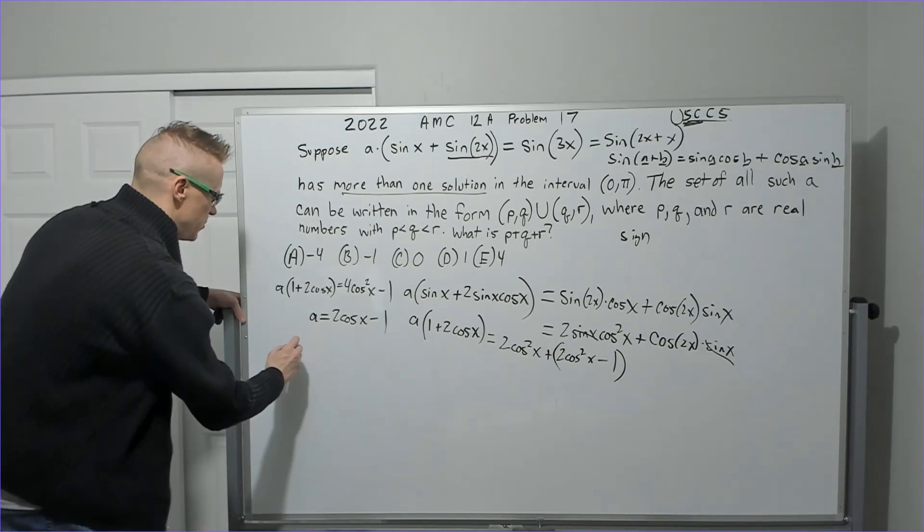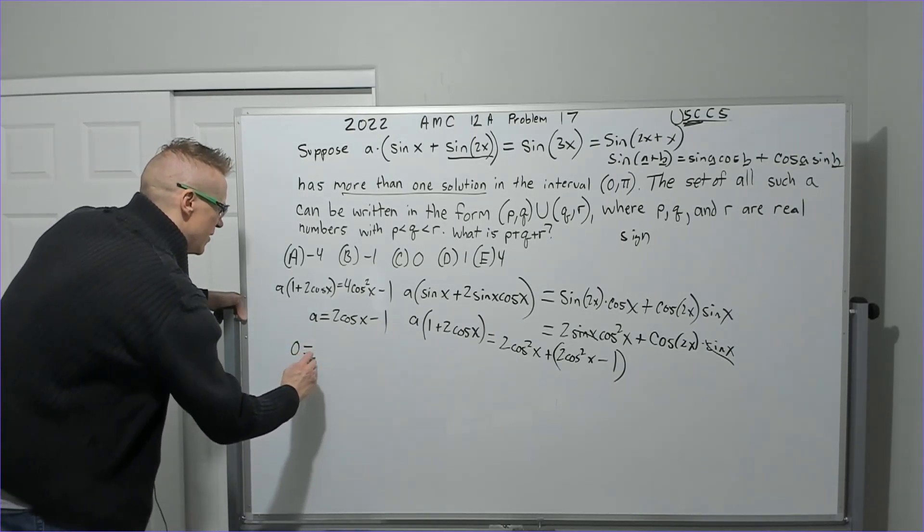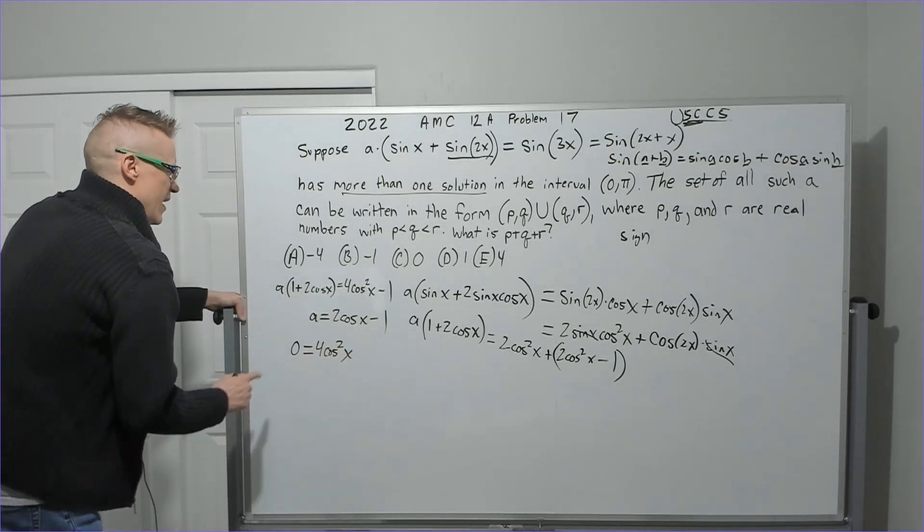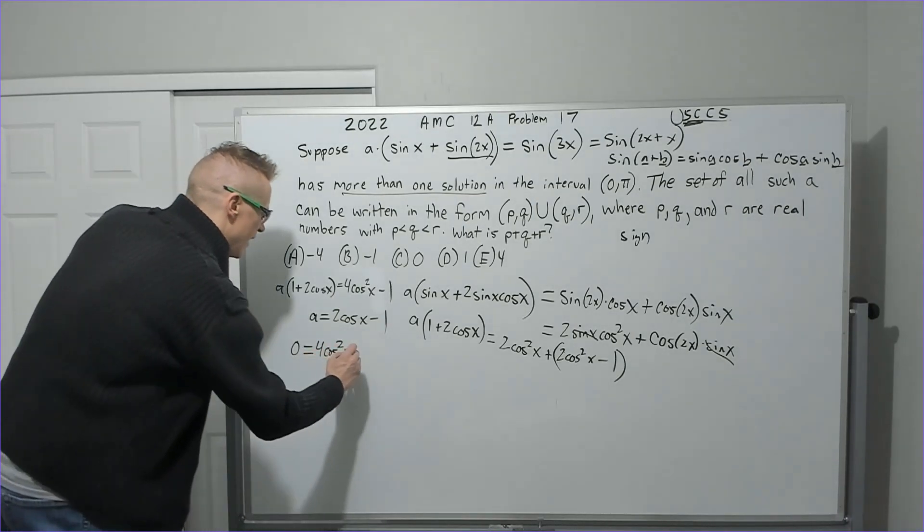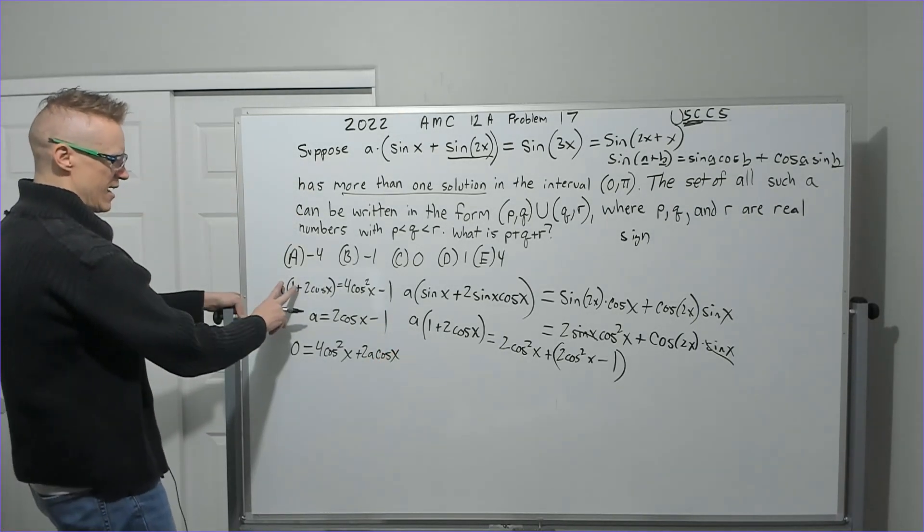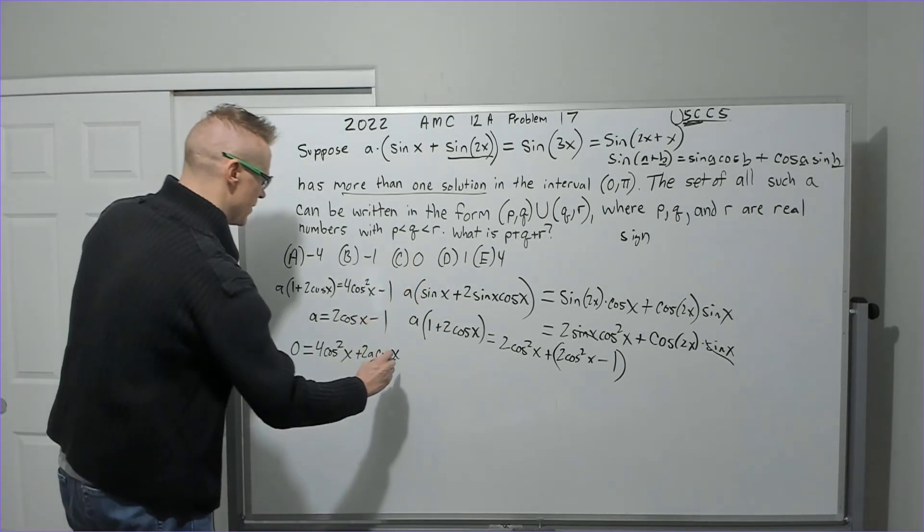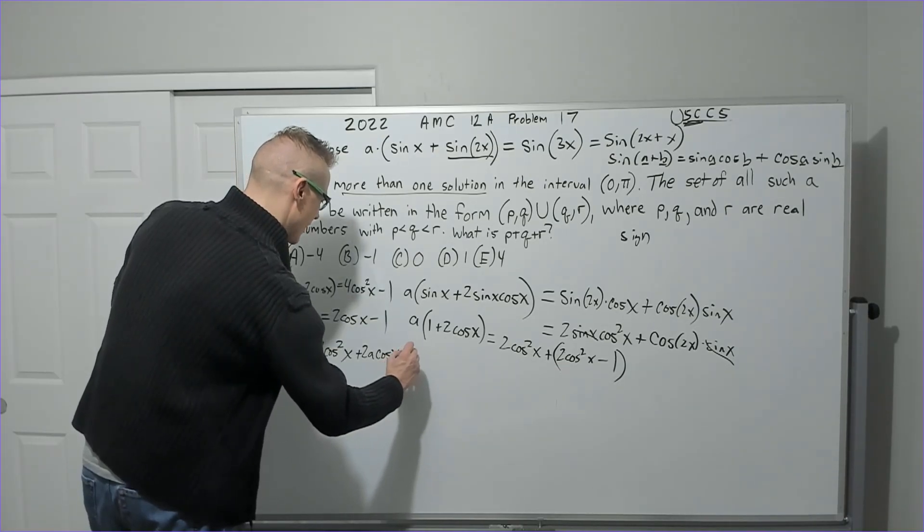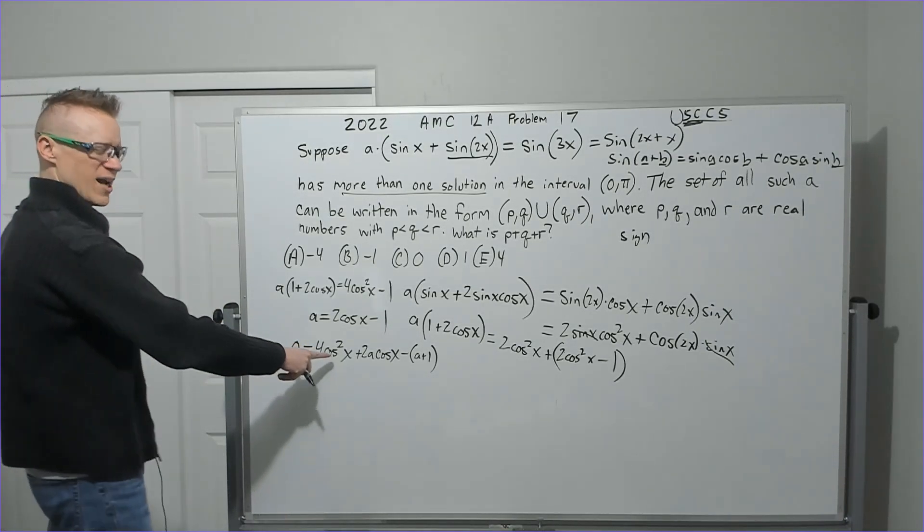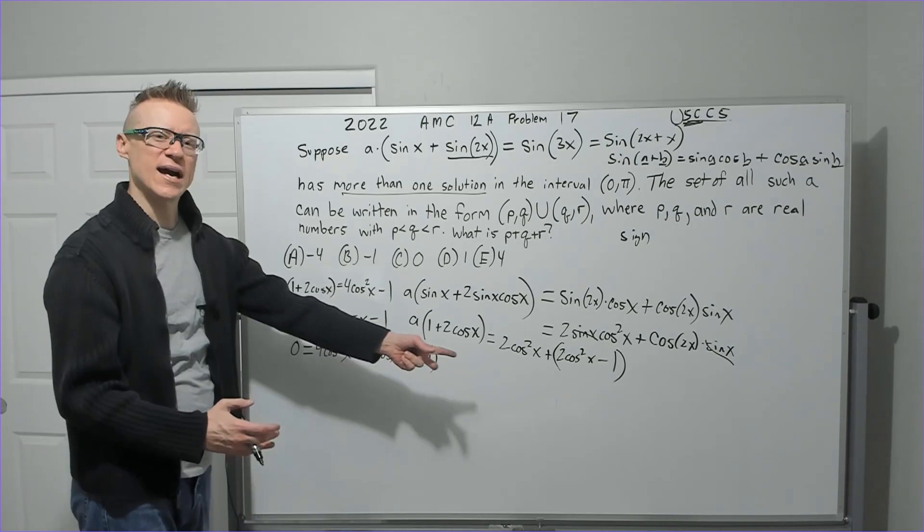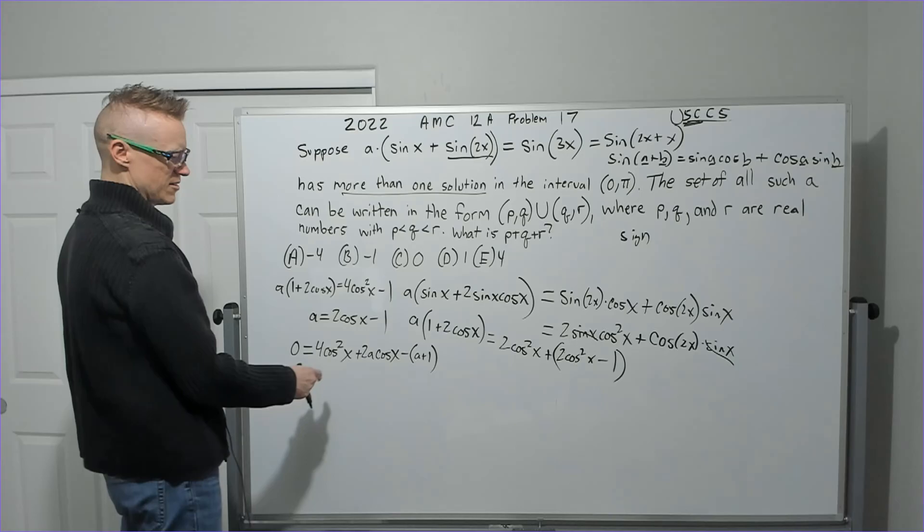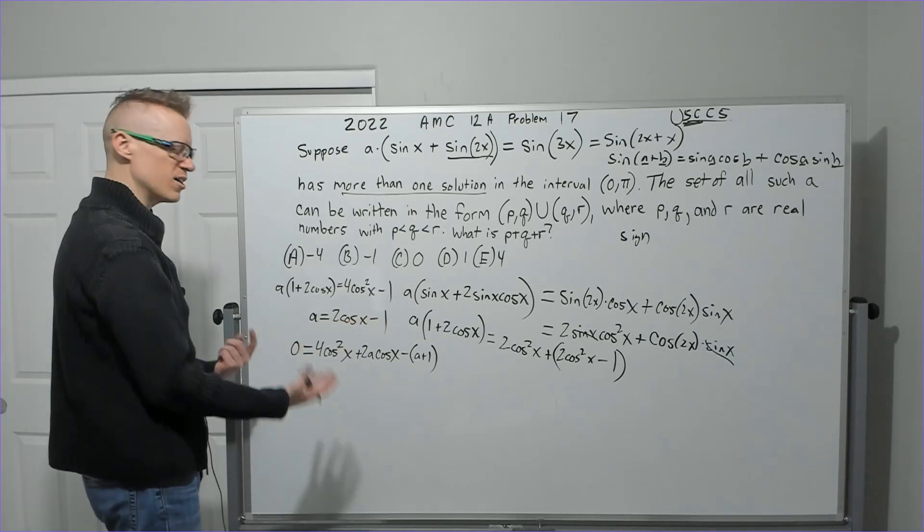What if I distributed, moved everything over? And so I had 4 cosine squared of x and then plus 2A cos of x and then a on the other side becomes negative. So I have minus a plus 1 or minus a minus 1. What I'm trying to create here is a quadratic in cosine as the variable. So cos of x is the variable, and so we don't have any a squareds, which is why we're targeting that.